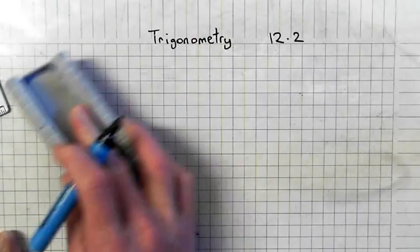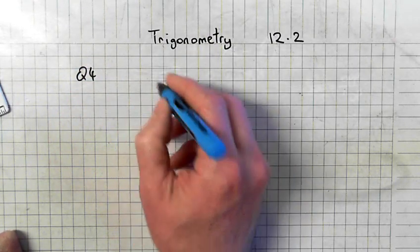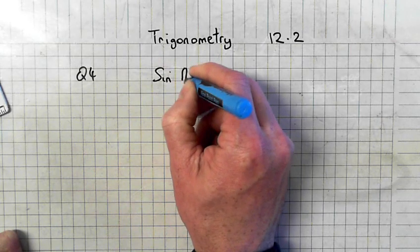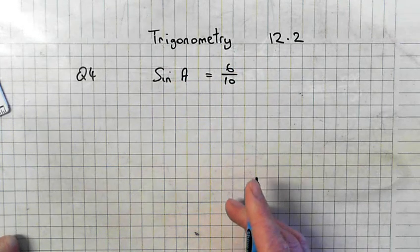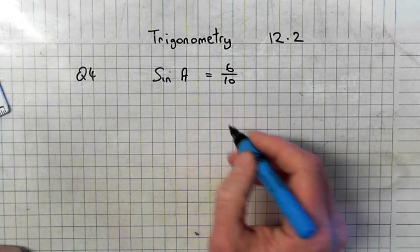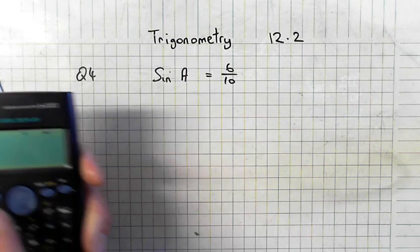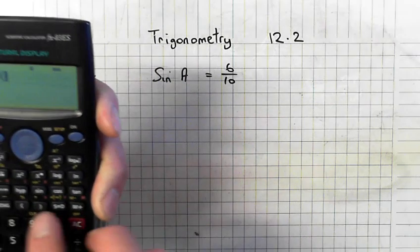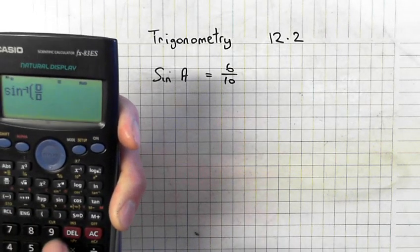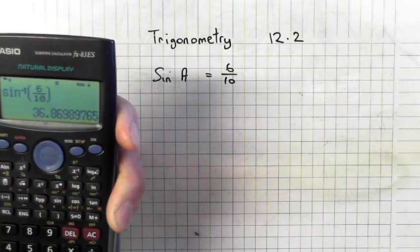Question 4, part i, the first one. Sine of A. Remember you did examples like this. Sine of A is equal to 6 over 10. So to find A, what you do is you go second function, sine, so sine minus 1, and then you key in 6 over 10, brackets, equals.